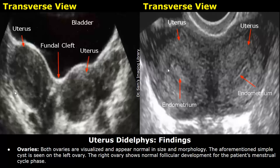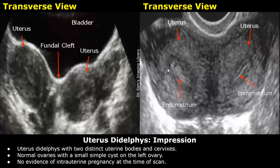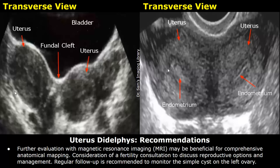This is the impression: uterus didelphys with two distinct uterine bodies and cervices. Normal ovaries with a small simple cyst on the left ovary. No evidence of intrauterine pregnancy at the time of scan.